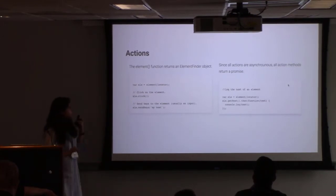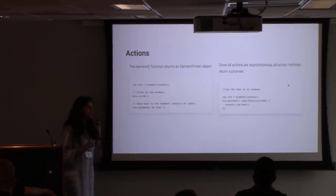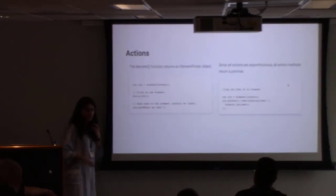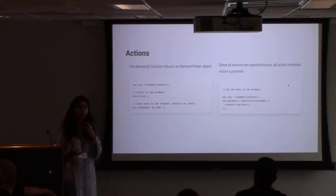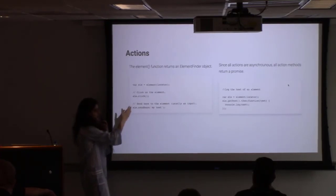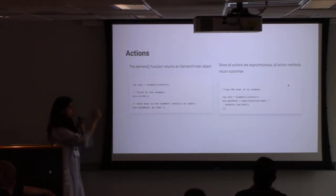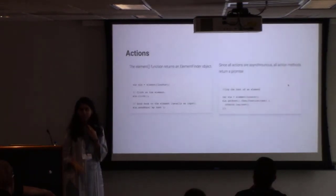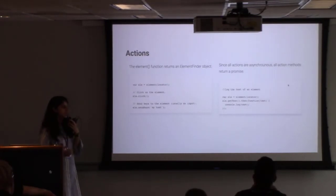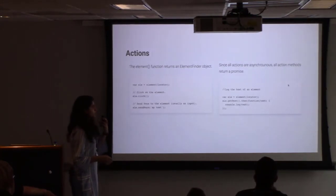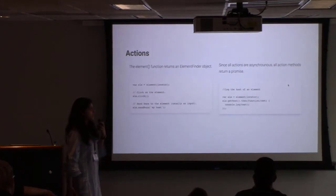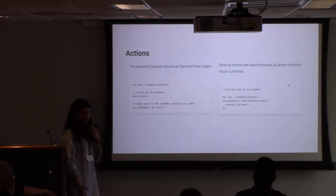The element function returns an ElementFinder object, which knows how to find the element on the page but will not interact with it until an action method is called. Action methods include `.click()`, `.sendKeys()`, and `.clear()`. All actions are asynchronous and all action methods return a promise. So to log the text of an element, you do `element.getText().then(function(text) { console.log(text); })`.